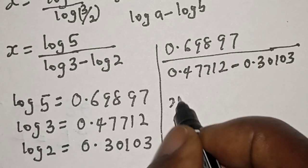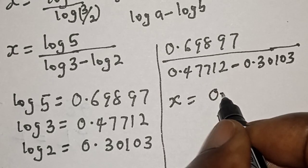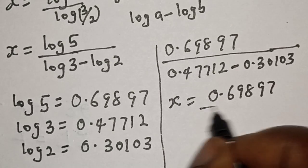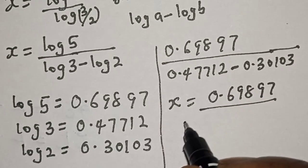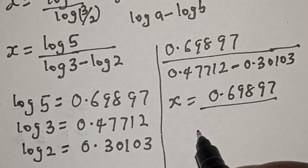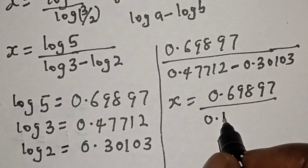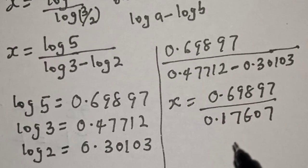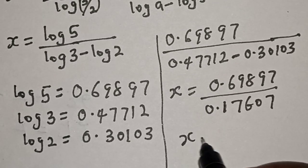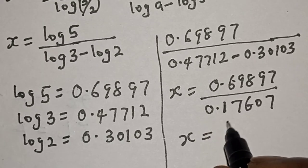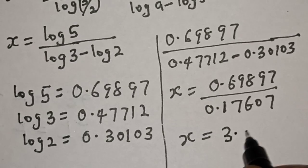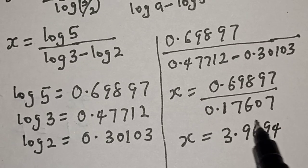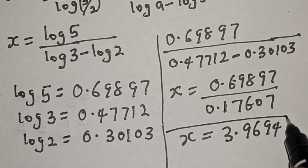Then x is equal to 0.69897. If you subtract 0.30103 from 0.47712, we have 0.17607. Then x is equal to — if you divide this by this — 3.9694. And this is the final answer.